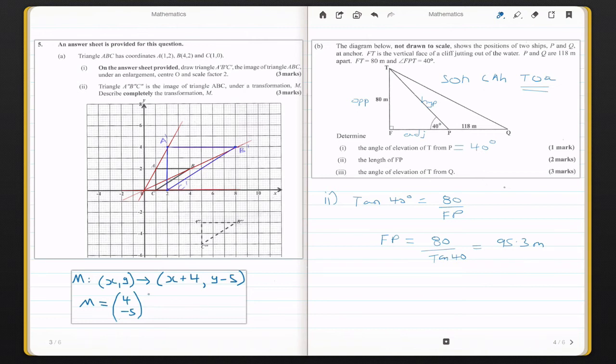Part three asks for a little more working in that we have to find the angle of elevation of T from Q. So we want to find this angle here. To do that, we would first find the length of this full side here, which would be by adding our 95.3 plus our 180. So 95.3 plus 180 is going to be equal to 213.3 meters.